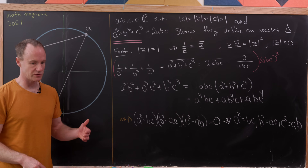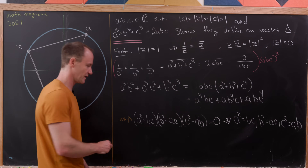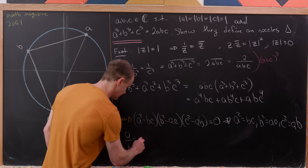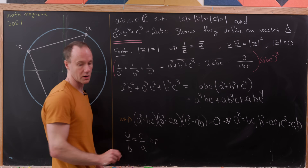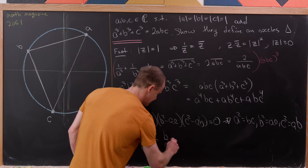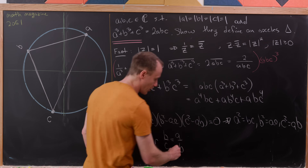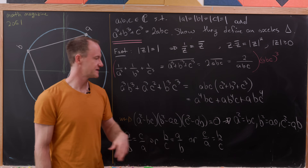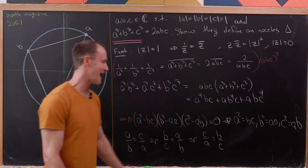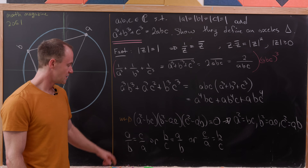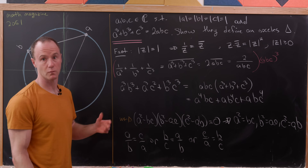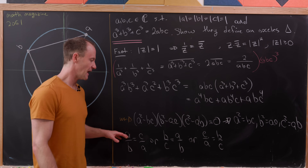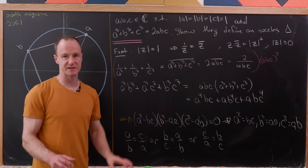Now we can divide these equations to get ratio relationships. We'll have b/c = a/b, or c/a = b/c. For instance, dividing the first equation a² = bc by ab, the left-hand side becomes a/b and the right-hand side becomes c/a, and we get the others via similar calculations.